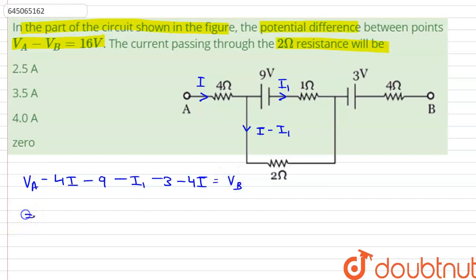And this implies that we can write that Va minus Vb is equals to 8 times I plus I1 plus 12. And since it is given to us in the equation that Va minus Vb is 16 volts, therefore, this will imply that 8 times I plus I1 is equals to 4 volts.